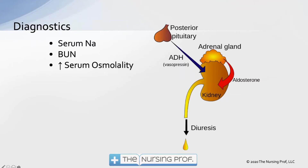Diagnostically, we look at serum sodium, BUN, and serum osmolality. Serum osmolality is going to be increased because the patient is diuresing heavily. The posterior pituitary is not releasing adequate antidiuretic hormone, so its effect on the kidney is absent and the patient diureses excessively.